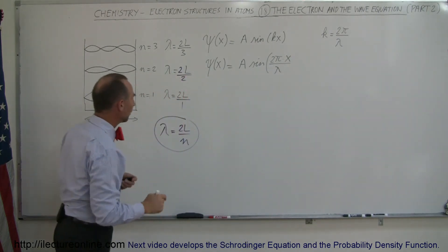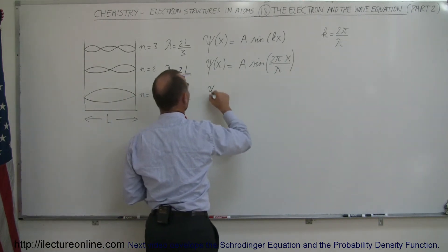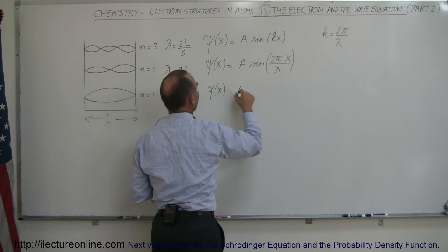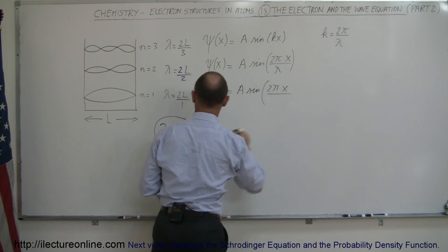And then we're going to replace lambda by 2L over n. So we can say that the wavelength is equal to A times the sine of 2πx divided by